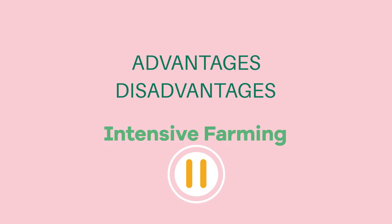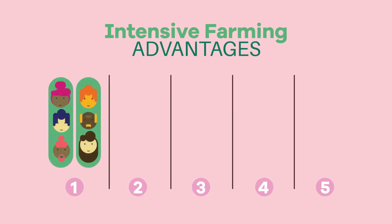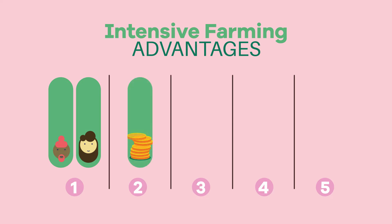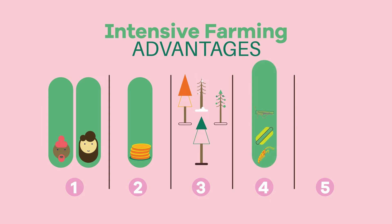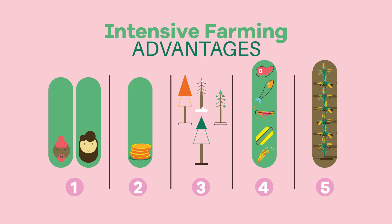The advantages of intensive farming include: it's not labor intensive, so fewer people are needed to work on the land; food can be sold cheaply as it's grown quicker using less resources; food can be produced all year round, not just in seasons; a greater variety of food can be produced; and less land is needed, so fewer natural habitats are destroyed.